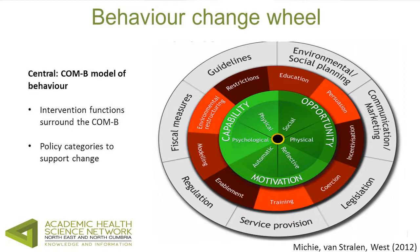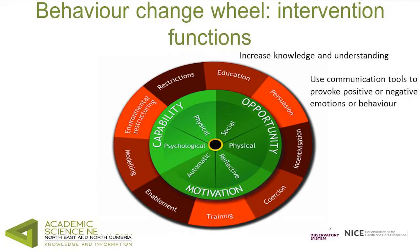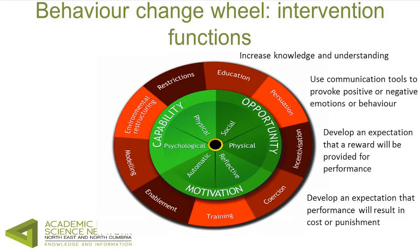We start with what we're trying to change, who we're trying to change, how we can change it, and what sort of policy-level support we have. The framework identifies nine types of interventions. Education increases knowledge and understanding. Persuasion uses specific communication techniques to provoke positive or negative emotions. Then there's the carrot-and-stick side: incentivization creates an expectation of reward for doing something, while coercion creates an expectation of punishment. Training is not about education — it's about developing physical, cognitive, social, and interpersonal skills.